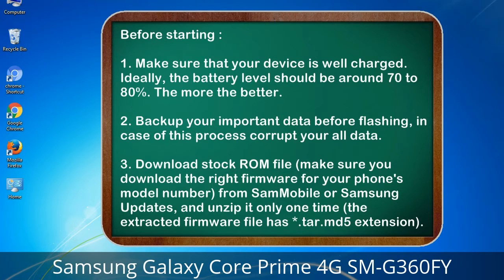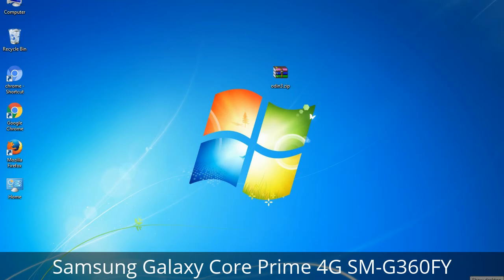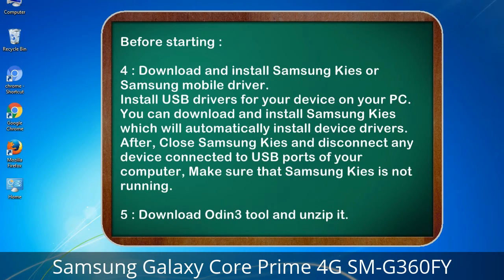3. Download the stock ROM file. Make sure you download the right firmware for your phone's model number from Sammobile or Samsung Updates, and unzip it only one time. The extracted firmware file has a *.tar.md5 extension. 4. Download and install Samsung KIS or Samsung mobile driver to install USB drivers for your device on your PC. Close Samsung KIS and disconnect any device from USB ports, making sure Samsung KIS is not running. 5. Download Odin3 tool and unzip it.